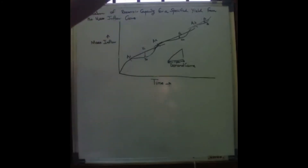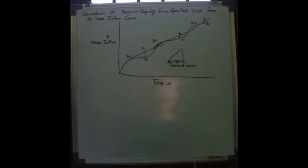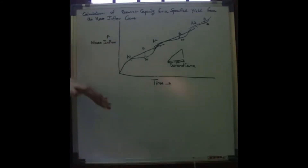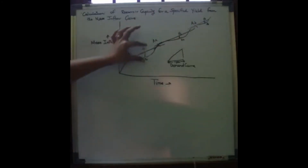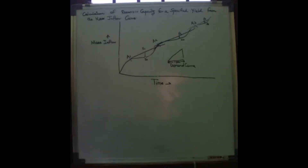From the apex points A1, A2, A3, we pass tangents parallel to the demand curve. From these tangent lines, we measure the maximum vertical intercepts E1D1, E2D2, E3D3 between the tangents and the mass inflow curve. These vertical intercepts indicate the volume by which the mass inflow curve falls short of demand.